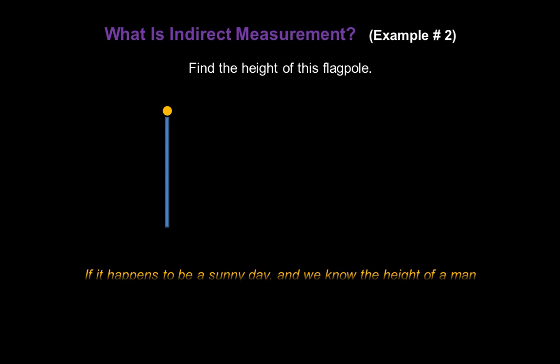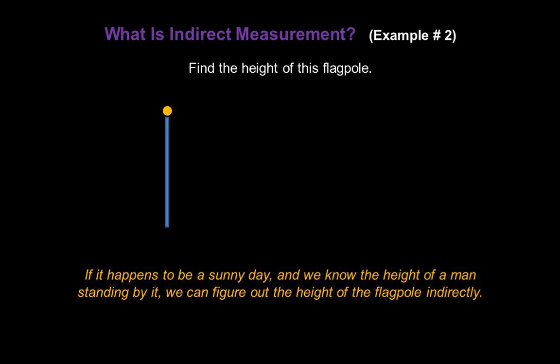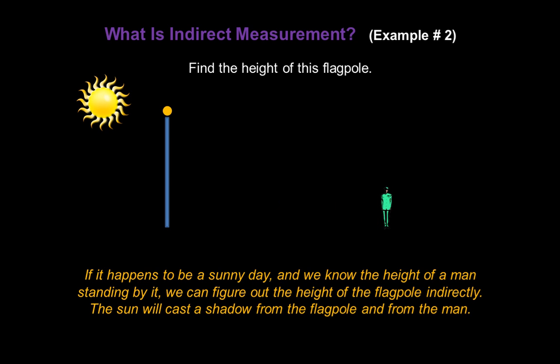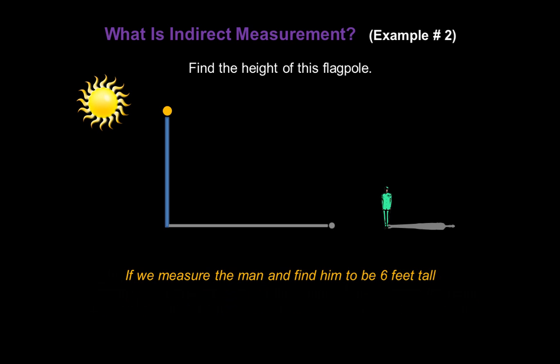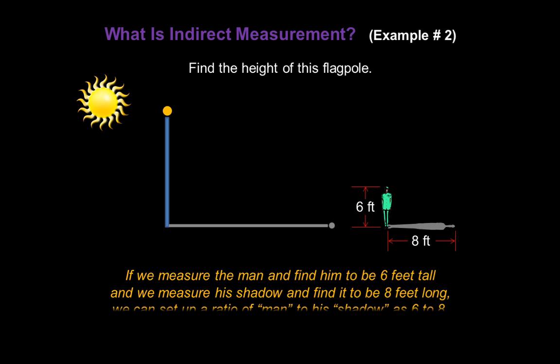Let's find the height of this flagpole. Now if it happens to be a sunny day, and we know the height of a man standing by it, we can figure out the height of the flagpole indirectly. The sun will cast a shadow from the flagpole and from the man. Now if we measure the man and find him to be 6 feet tall, and we measure his shadow and find it to be 8 feet long, we can set up a ratio of man to his shadow, which would be 6 to 8.